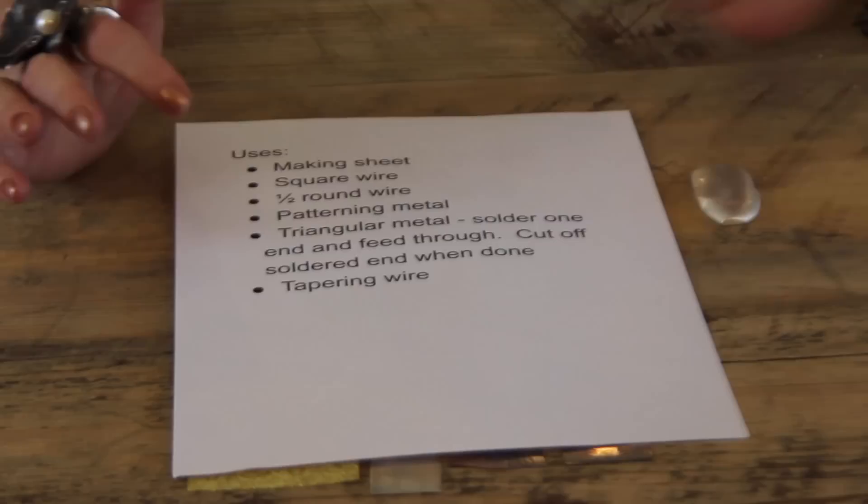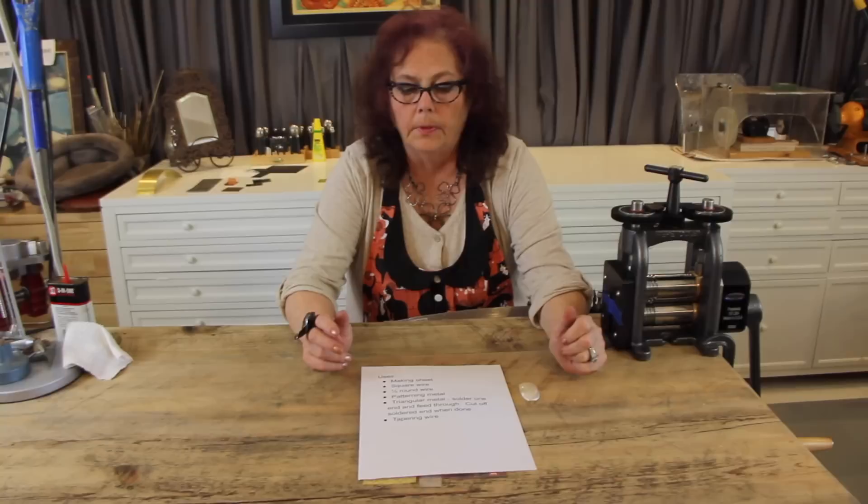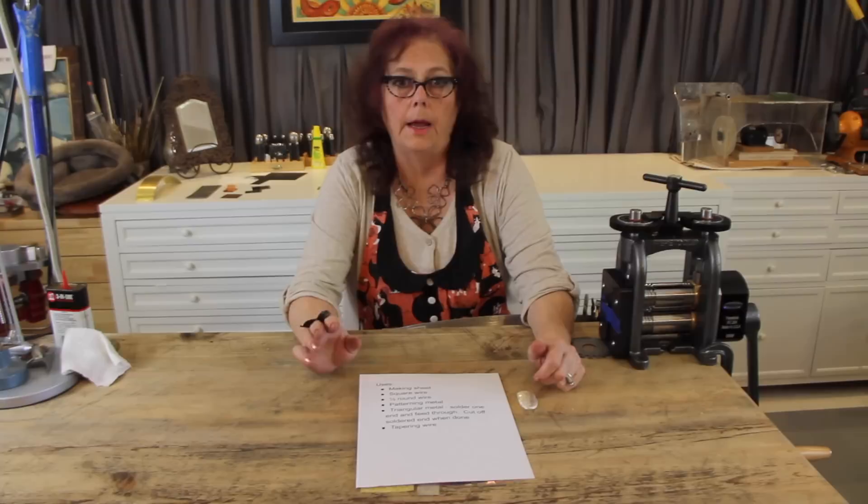You can pattern metal. You can also make triangular wire by soldering two pieces of wire together at one end and rolling it through. You end up with two half squares, which is a triangle. You can taper wire in here too. I have a video on that also. Those are some of the things that you can do with a rolling mill. One of my favorite things to do with a rolling mill is to pattern my metal.